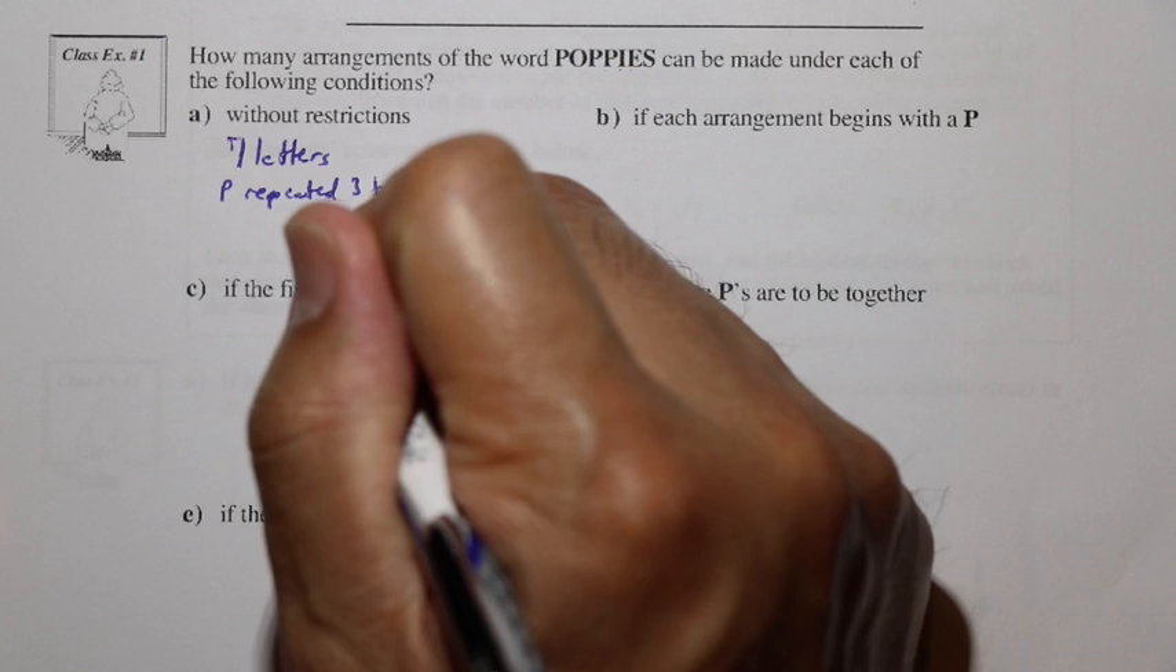Taking a look at class example one, how many arrangements of the word POPPIES can be made under each of the following conditions? Here without restrictions. Well here we have seven letters. But let's take a look at the repetitions. We have seven letters, and we have a P that is repeated three times. It's going to be 7 factorial divided by 3 factorial for the P's here. So 7 factorial divided by 3 factorial, that's equal to 840.